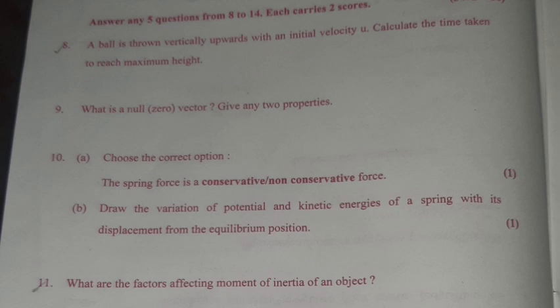Answer any 5 questions from 8 to 14, each carries two scores. 8. A ball is thrown vertically upwards with an initial velocity u. Calculate the time taken to reach maximum height. 9. What is a null (zero) vector? Give any two properties.